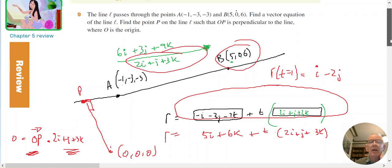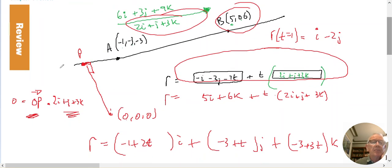So find the point P on the line. So the point P on the line will be 1, negative 2, 0 will be point P where it's at right angles.